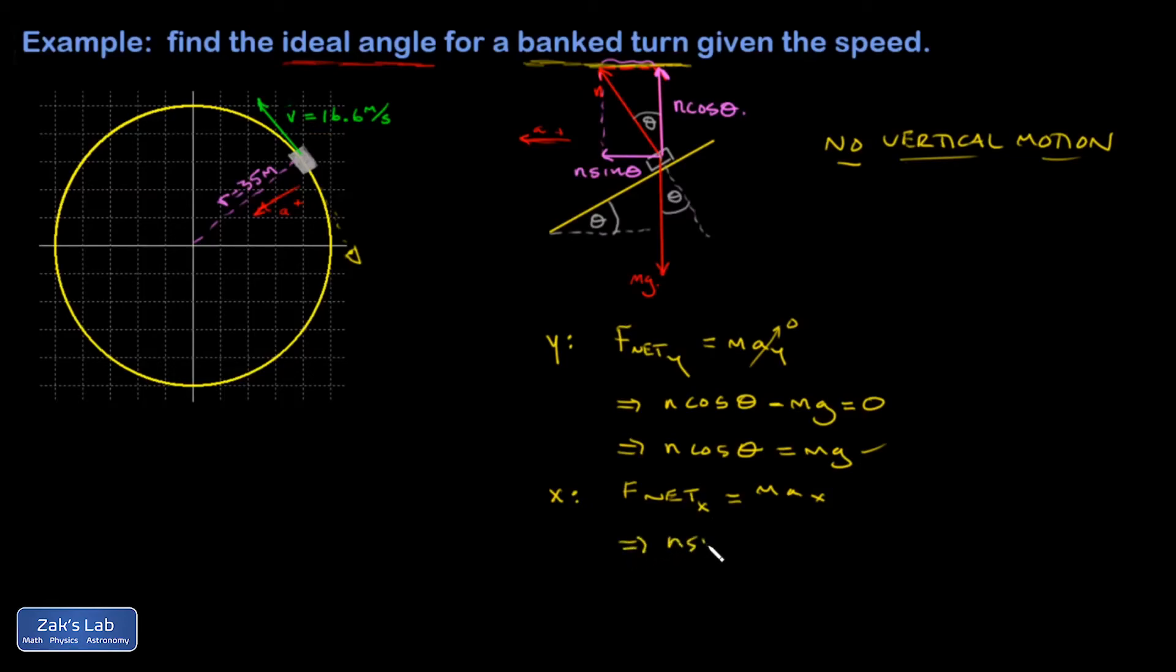That's n sine theta, and that's equal to m, the mass of the car, times the x acceleration. Well that's going to be v squared over r. In order to be on a circular path with a speed of v and a radius of r, you must have a center pointing acceleration equal to v squared over r.